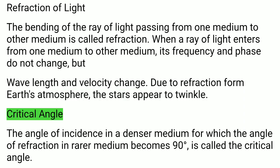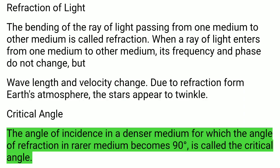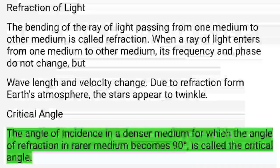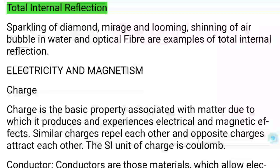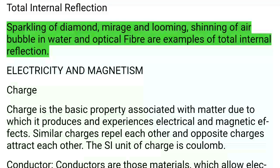Critical Angle: The angle of incidence in a denser medium for which the angle of refraction in a rarer medium becomes 90° is called the critical angle. Total Internal Reflection: Sparkling of diamonds, mirage and looming, shining of air bubbles in water, and optical fiber are all examples of total internal reflection.